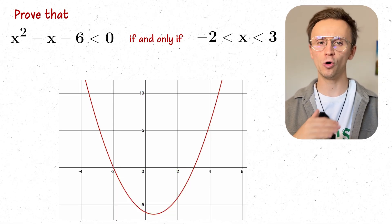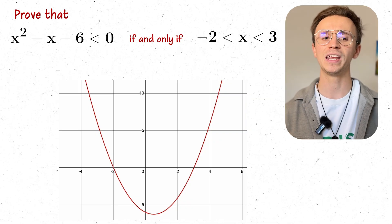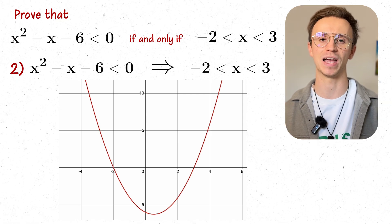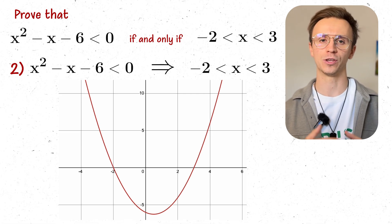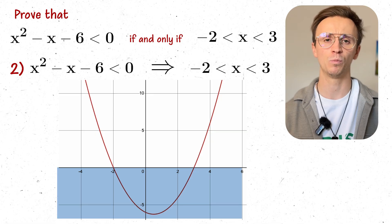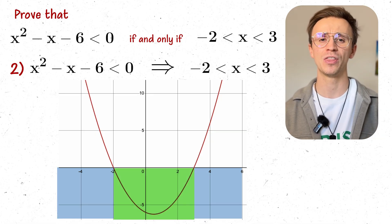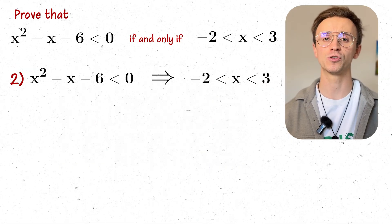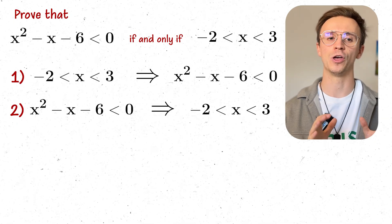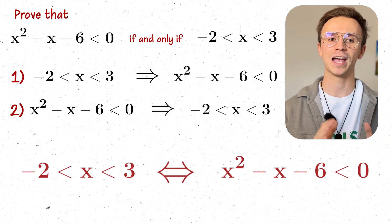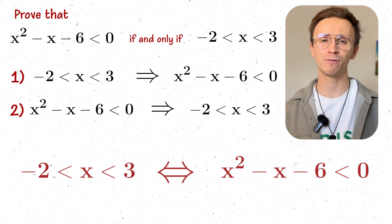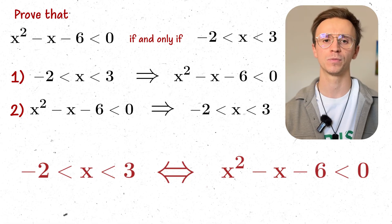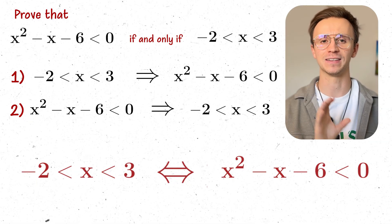Now to prove the only if statement, we need to prove it backwards. We assume that x² - x - 6 is less than zero and then show that x is between -2 and 3. Looking at when the graph is less than zero, it's only less than zero between these two points. From our sketch, those points are minus two and three. So we've shown the only if statement — x² - x - 6 < 0 if and only if x is between -2 and 3. Both directions work.